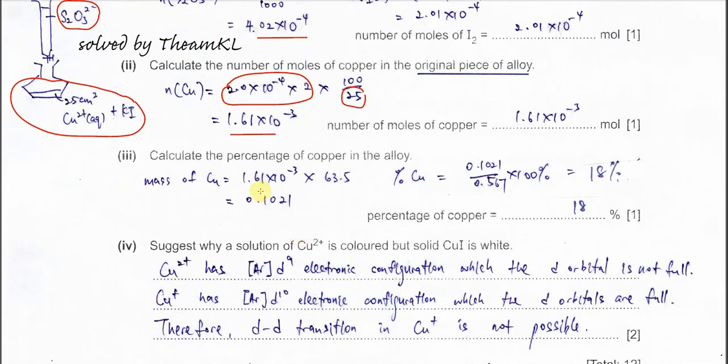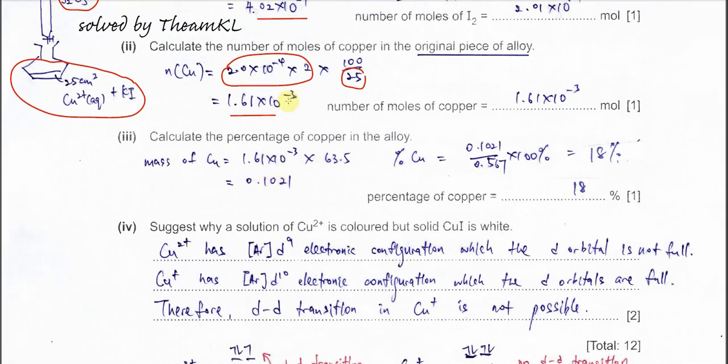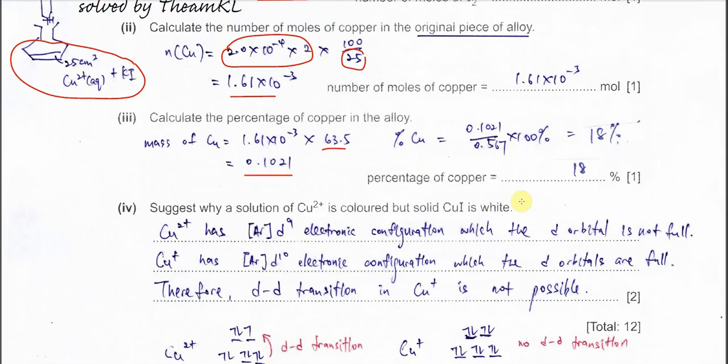After that, calculate the percentage of copper in the alloy. Just use the moles obtained times the molar mass of copper, so we get 0.102. Use this mass over the total mass, which is 0.567, times 100%. We get 18%. So the percentage of copper in this alloy is 18%.